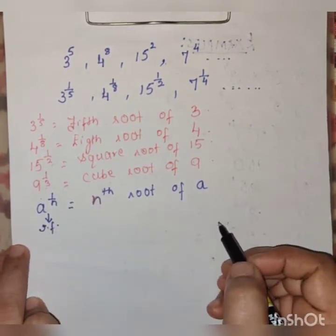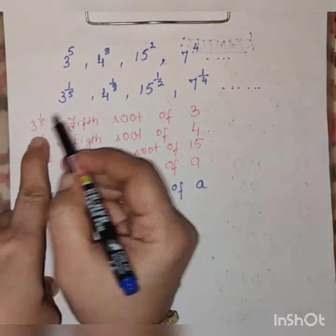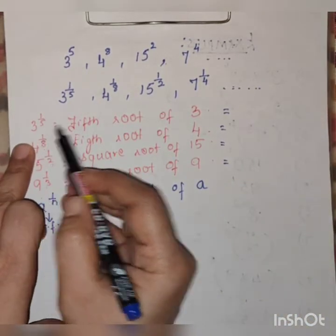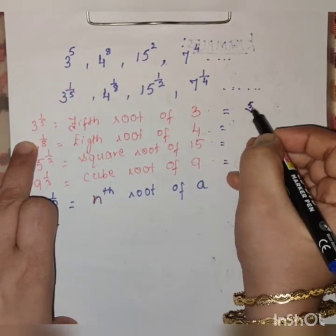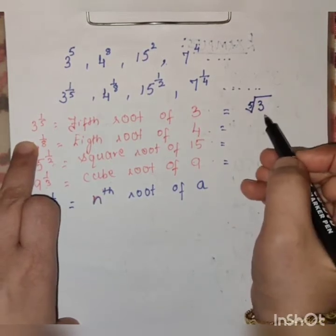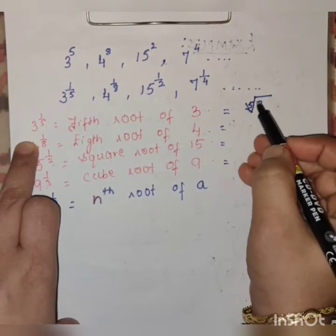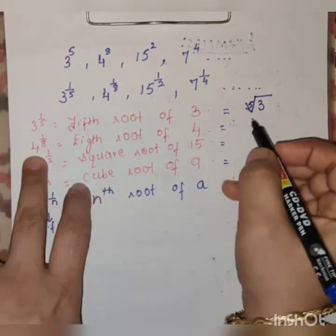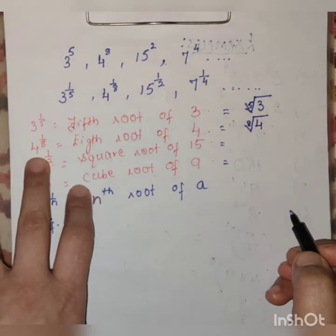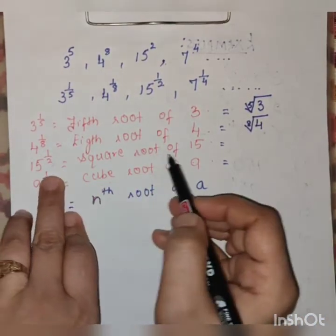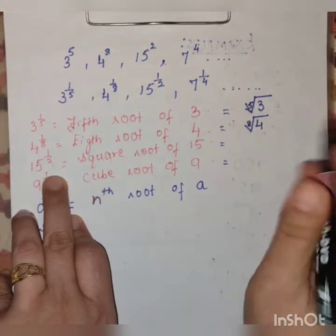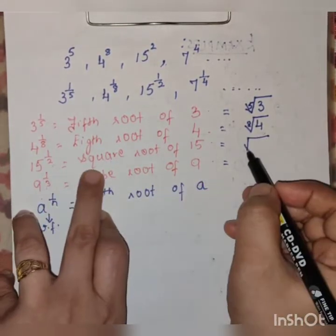Now students, using the radical sign: 3 raised to 1 upon 5 is written with a radical sign with small 5 written at the top left, and 3 inside. For the 4th root of 4, we write 4 in small at the top left of the radical sign. For square root, we do not write 2 - only the radical sign is used, because square root is always denoted just by the radical sign.